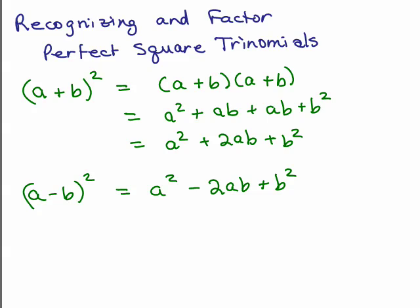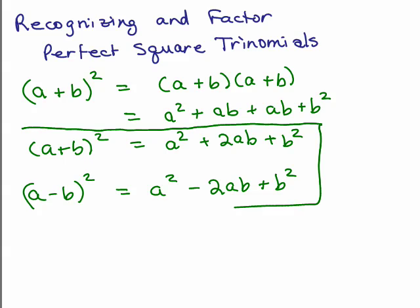We're going to go over how to recognize and factor perfect square trinomials. Let's start off with the binomial a plus b. When you square it, remember that means a plus b times a plus b. If you do the FOIL method and combine like terms, you get a squared plus 2ab plus b squared. Similarly, if instead it was a minus b, the only difference is the middle term would be negative 2ab. So summarizing: (a+b)² = a²+2ab+b², and (a−b)² = a²−2ab+b².